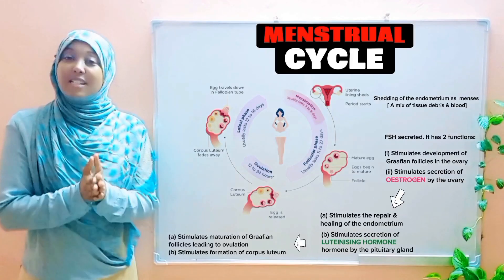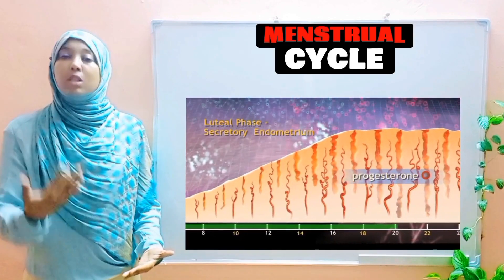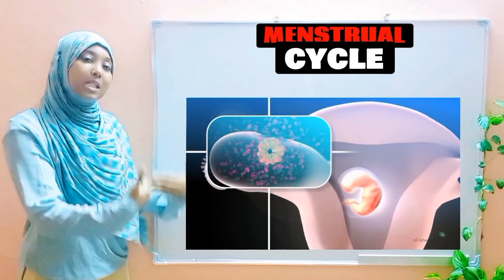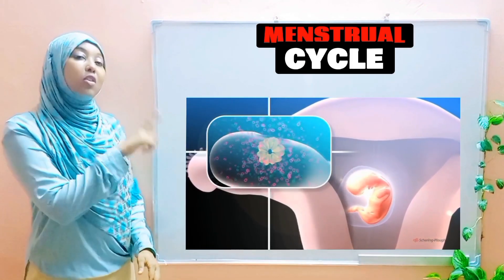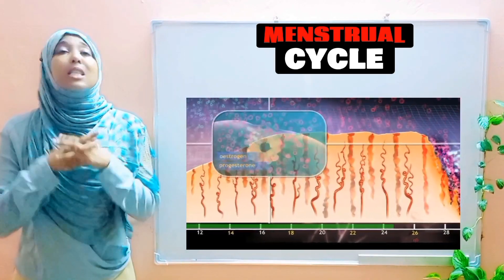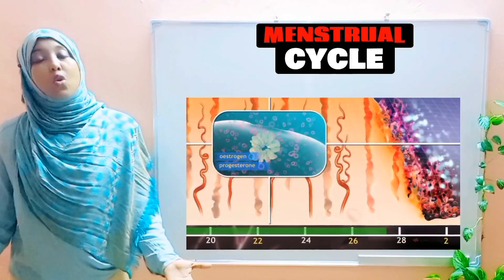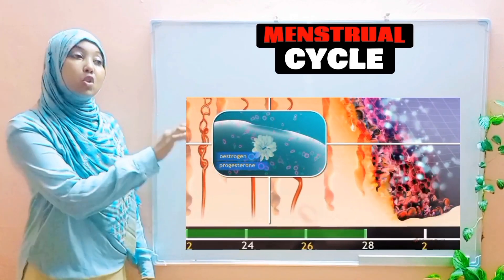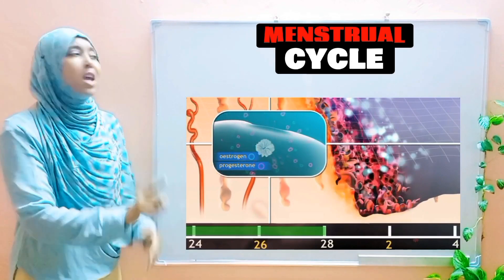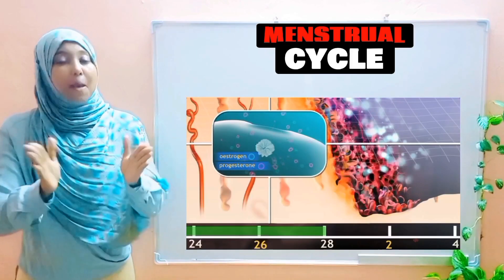If there is implantation, progesterone continues to be produced and its concentration continuously increases throughout the pregnancy, maintaining it and inhibiting FSH. But if fertilization does not take place, the corpus luteum breaks down and progesterone is no longer secreted. The concentration of progesterone drops, and we enter the first phase again — menstruation. This cycle repeats again and again until a woman reaches menopause.